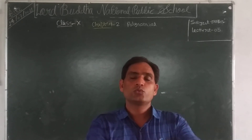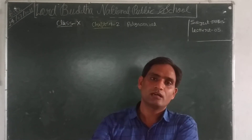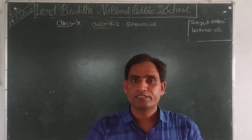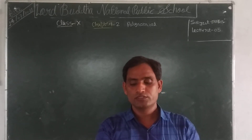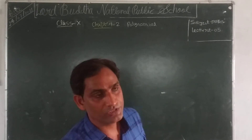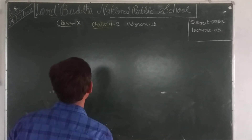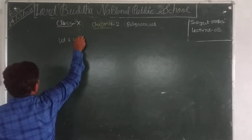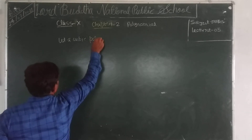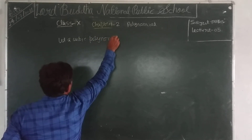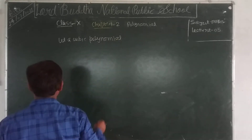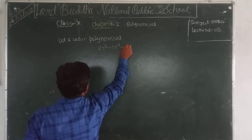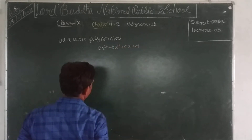After that, today I will solve the numerical problems of Exercise 2.2. First of all, let us take a cubic polynomial of the form: ax³ plus bx² plus cx plus d.